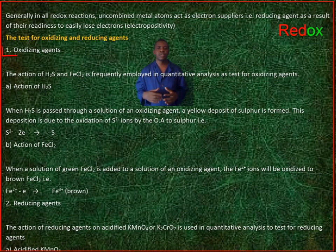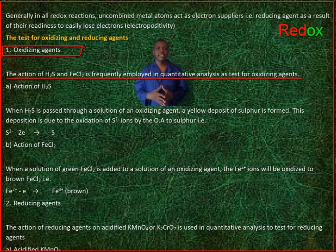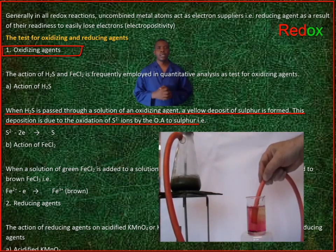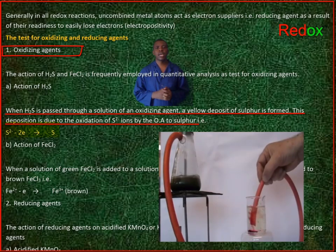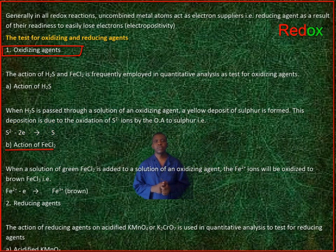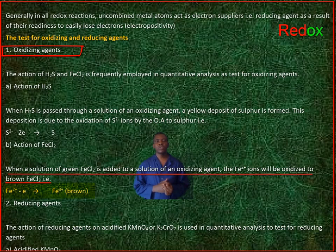The test for oxidizing and reducing agents. 1. Oxidizing agents. The action of hydrogen sulfide and iron(II) chloride is frequently employed in quantitative analysis as a test for oxidizing agents. Action of hydrogen sulfide: when hydrogen sulfide is passed through a solution of an oxidizing agent, a yellow deposit of sulfur is formed. This is due to the change of oxidation state of sulfide ions by the oxidizing agent to sulfur. Action of iron(II) chloride: when a solution of green iron(II) chloride is added to a solution of an oxidizing agent, the iron(II) ions will be oxidized to brown iron(III) chloride.